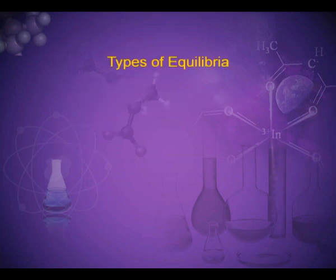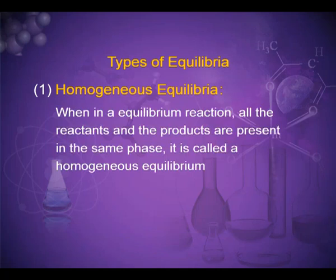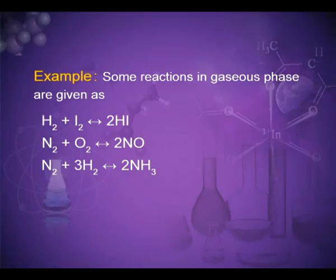Now the types of equilibrium — there are two types. First is homogeneous equilibrium. When in an equilibrium reaction all the reactants and products are present in the same phase, it is called homogeneous equilibrium. Examples of reactions in the gaseous phase include: H2 + I2 ⇌ 2HI, and N2 + 3H2 ⇌ 2NH3 — all species sharing the same gaseous phase.